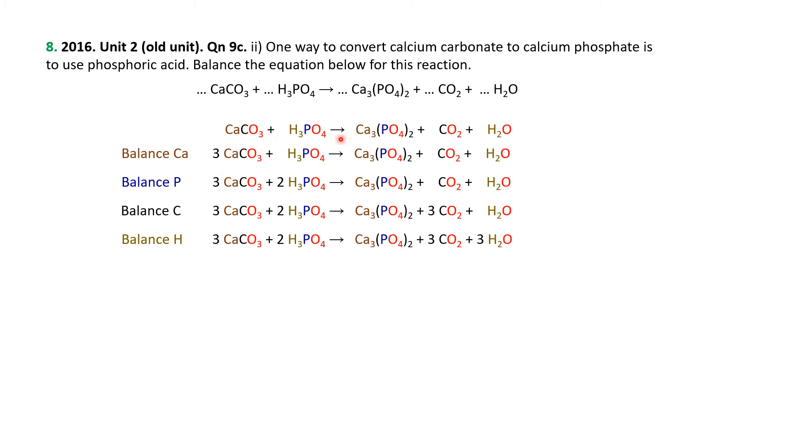And now we better hope that the oxygens are balanced because anything that we do to perturb where we are now is going to require going through the whole process again. So let us optimistically check the oxygens. We've got 17 on the left. We've got three times three is nine. Two times four is eight. Nine plus eight is 17. And on the right, two times four is eight plus six plus three is 17. So with great joy and jubilation, we'll put a little answer box around that version of the equation.